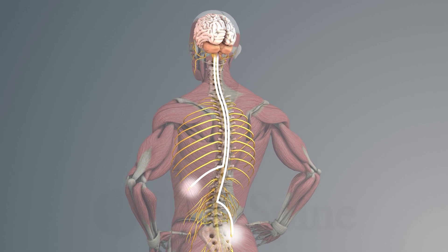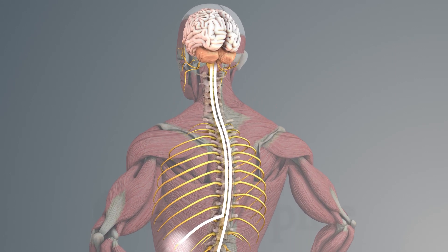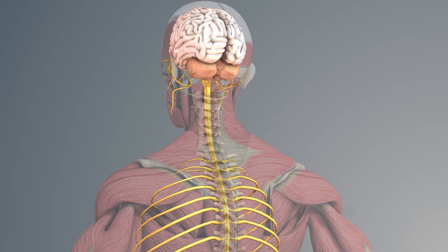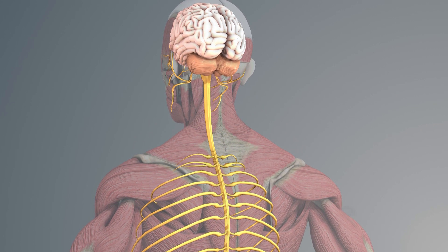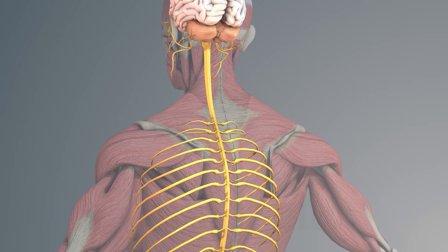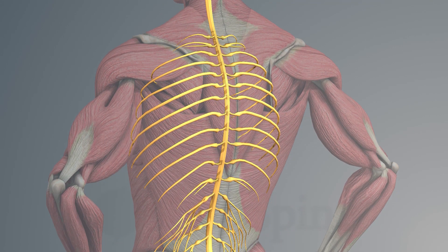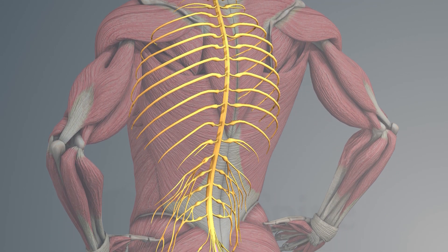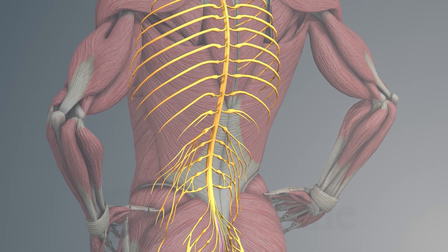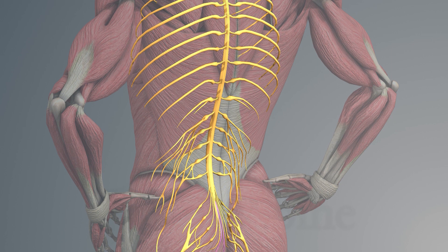The bundle of all the individual wires that come out of the brain is the spinal cord. They then separate to become those individual wires to the specific areas.